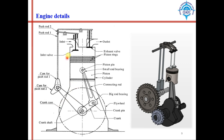The bottom portion below this point is called the sump or crankcase. The upper portion above this point is called the cylinder head. The cylinder head has openings for inlet and exhaust gases, openings for valves, as well as a spark plug for petrol engines and a fuel injector for diesel engines.